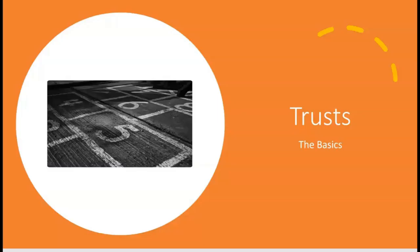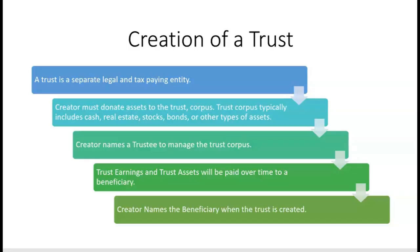Let's go over the basics about trusts. A trust is a separate legal entity and a separate tax-paying entity. The creator of a trust must donate assets to the trust. These assets are known as corpus, and trust corpus could typically include cash, real estate, stocks, bonds, or any other types of assets that the donor — the creator — decides to contribute.